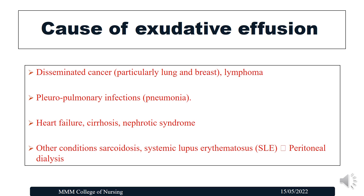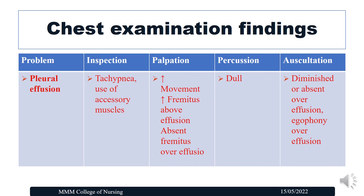Causes of exudative effusions include disseminated cancer (particularly lung, breast, or lymphoma), pleural or pulmonary infections such as pneumonia, heart failure, cirrhosis, nephrotic syndrome, sarcoidosis, systemic lupus erythematosus (SLE), and peritoneal dialysis. Chest examination findings in pleural effusion: in inspection, tachypnea and use of accessory muscles. In palpation, decreased chest movement and absent or decreased fremitus over the effusion area. In percussion, dull sound. In auscultation, diminished or absent breath sounds over the effusion area and egophony can be heard.